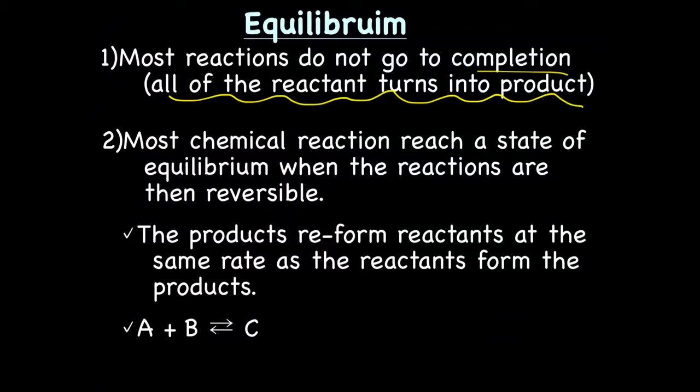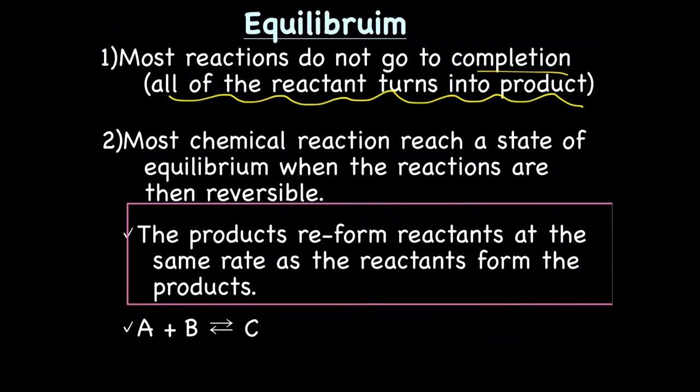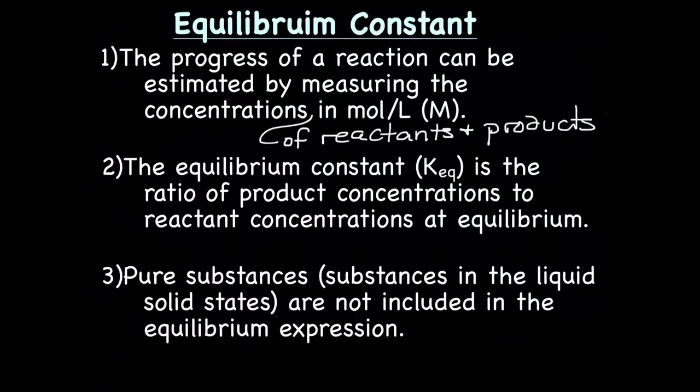During equilibrium, the products reform reactants at the same rate as the reactants are forming products. The way you know that a reaction is reversible is the arrows in equation form, because you have arrows going from product to reactant and from reactant to product. A reaction that goes to completion would have a single arrow.